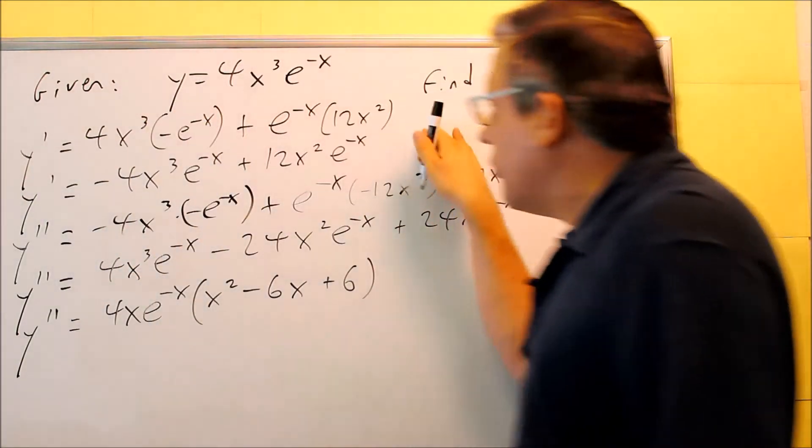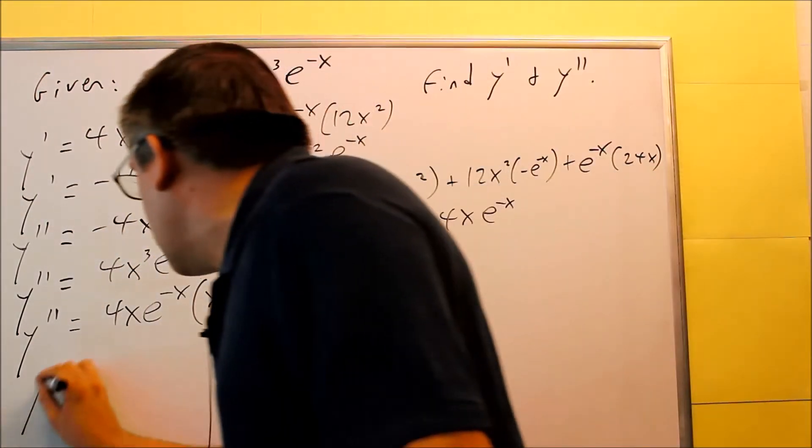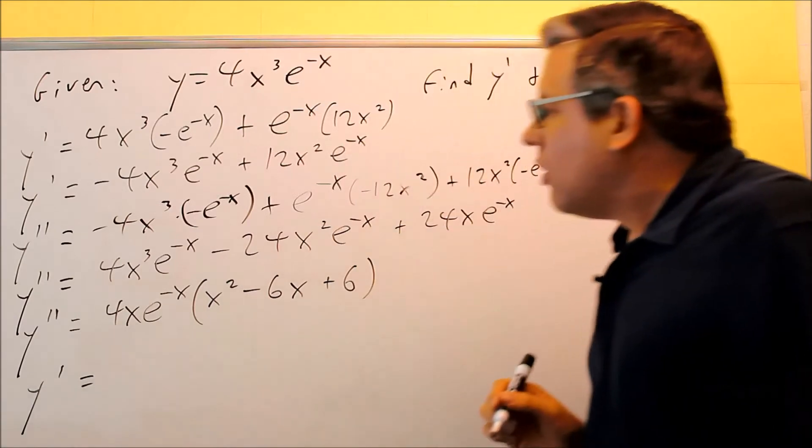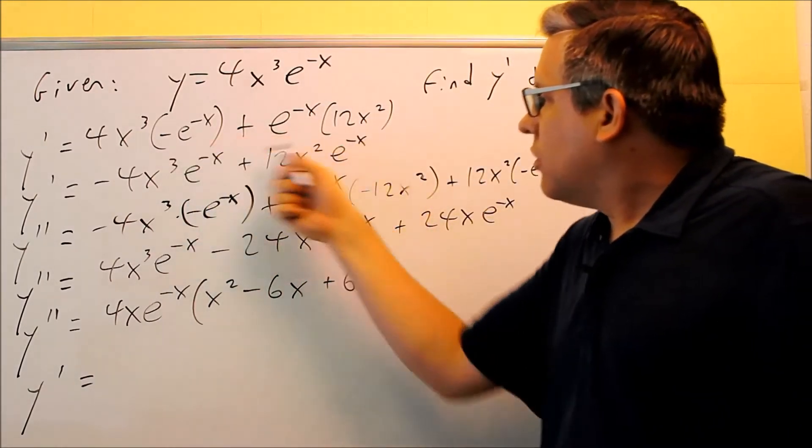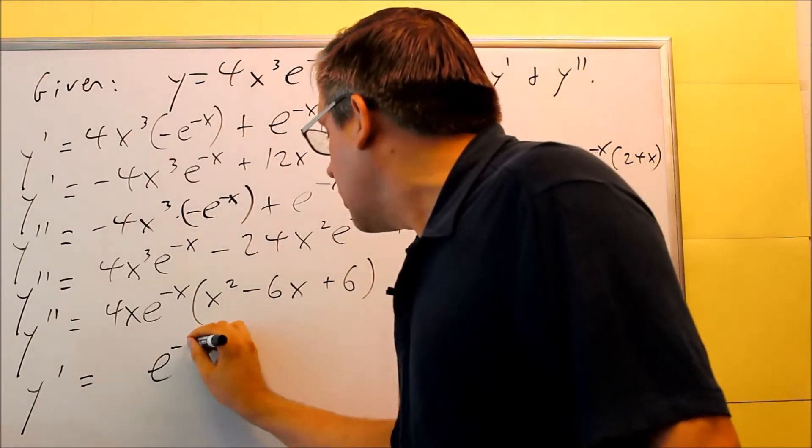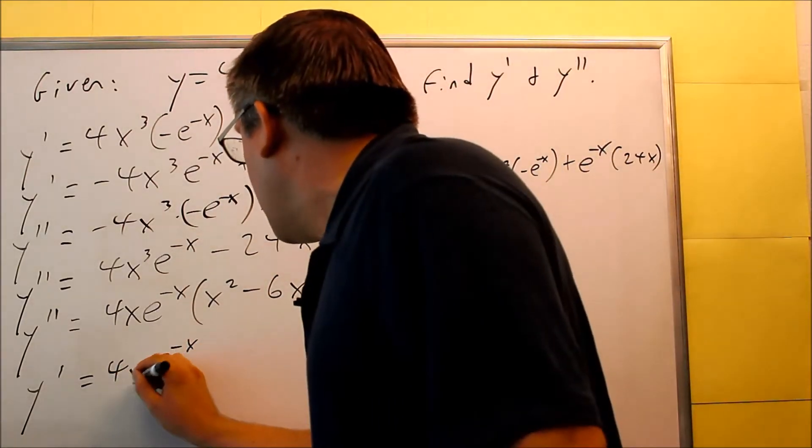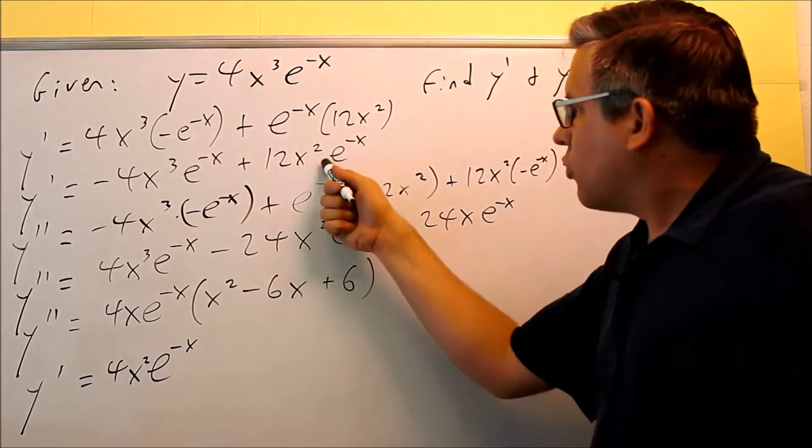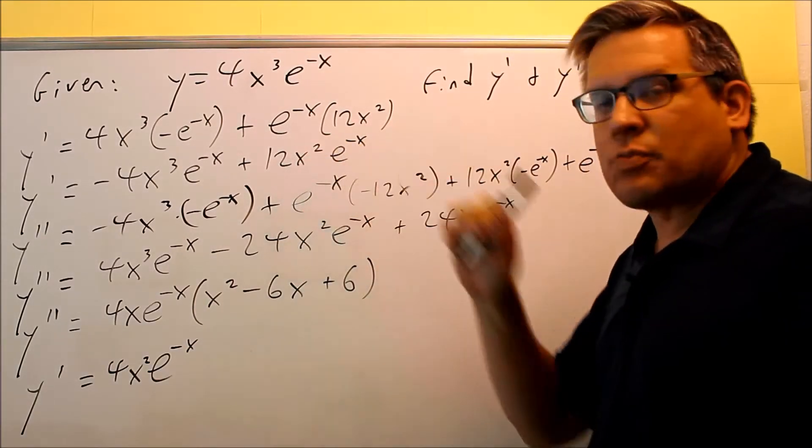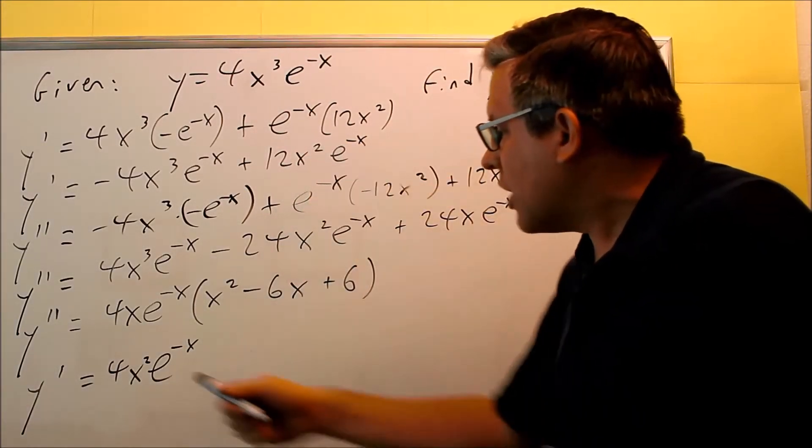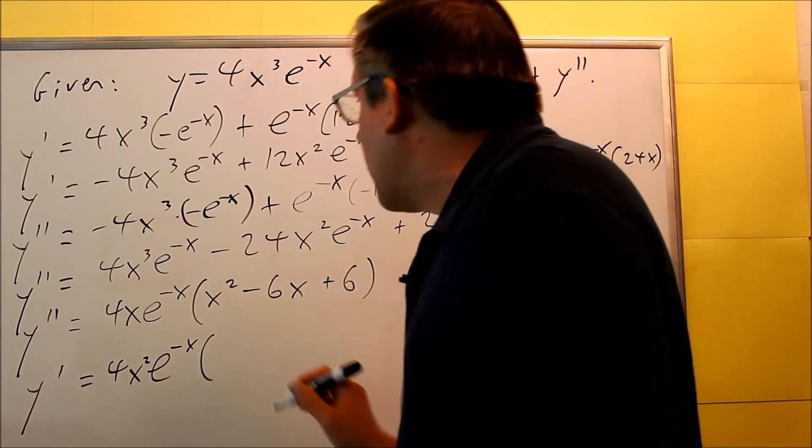Let's go back to the first derivative. We want to write that one out also in a nice factored form. So, let's go back to this one. Again, we can pull out e^(-x) from both of those. We can pull out a 4, but we can pull out an x² on this one. You can pull out only the smallest power of x that you have available. In this case, it's going to be that one. We factor that out.